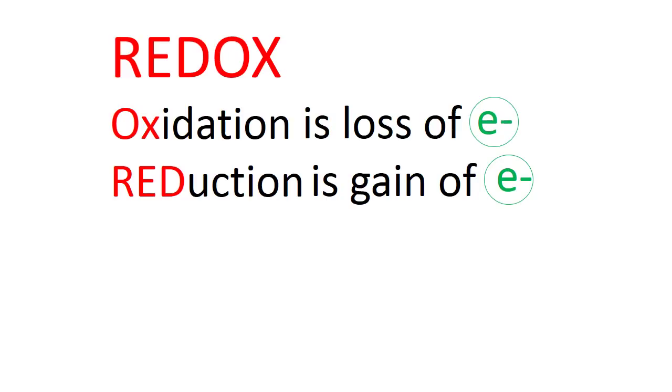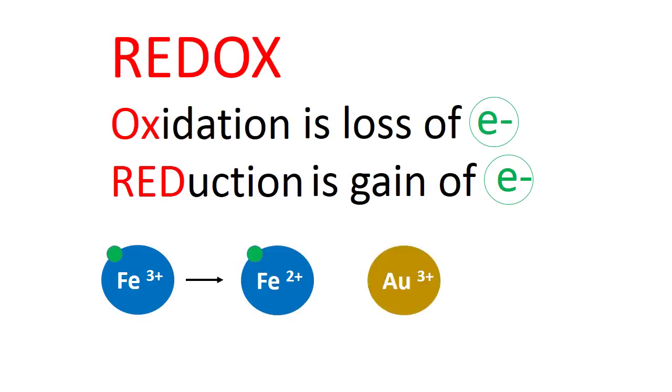How does something gaining electrons become reduced? When you gain electrons, what happens? It becomes more negative. And when you become more negative, your charge becomes more reduced, or more negative.